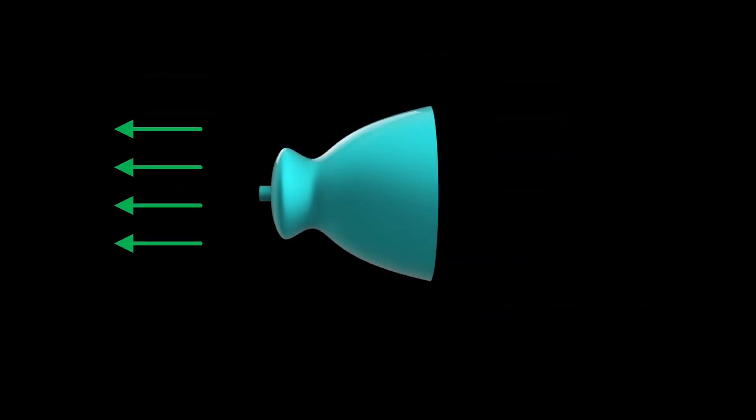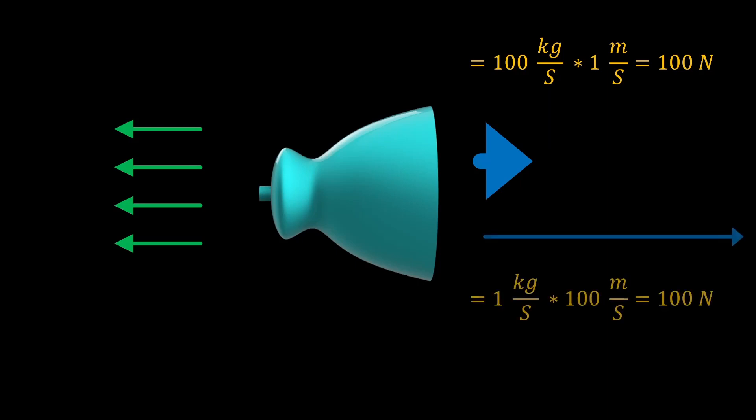Since thrust depends on both the mass of the exhaust and how fast it is moving, we have a choice. If we toss out 100 kilograms per second at a velocity of 1 meter per second, our thrust is 100 newtons. If we toss out 1 kilogram per second at a velocity of 100 meters per second, our thrust is also 100 newtons. The difference is that the first example burns 100 kilograms of propellant each second, and the second one burns 1 kilogram per second, so our propellant burn in the first case is 100 times the second case. We therefore want the exhaust velocity of our rockets to be as high as possible.